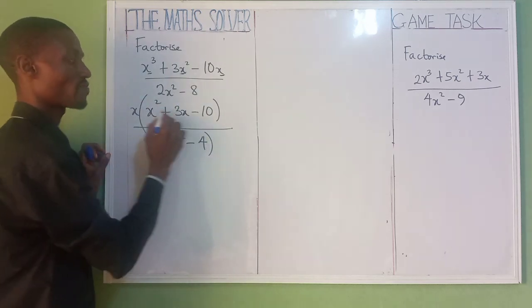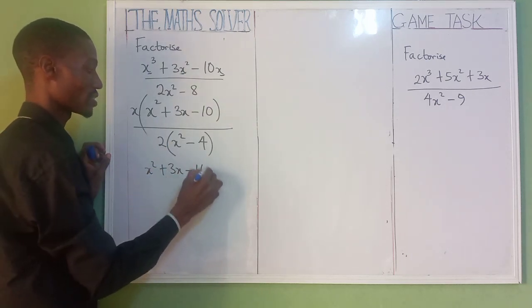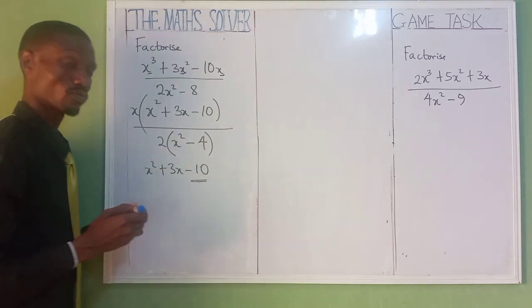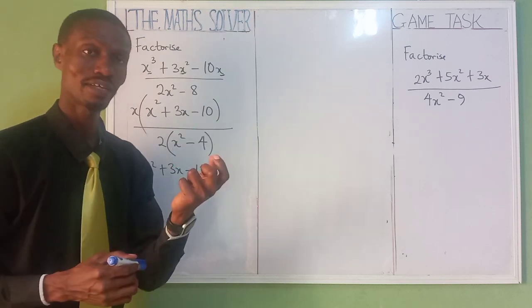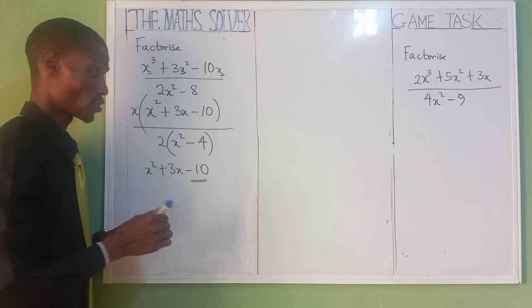Let's now factorize this one separately. We have x² + 3x - 10. As you can see, we have minus 10 as our last term. Think of two numbers multiplied together that will give you minus 10, and when added together give you plus 3, the middle coefficient.